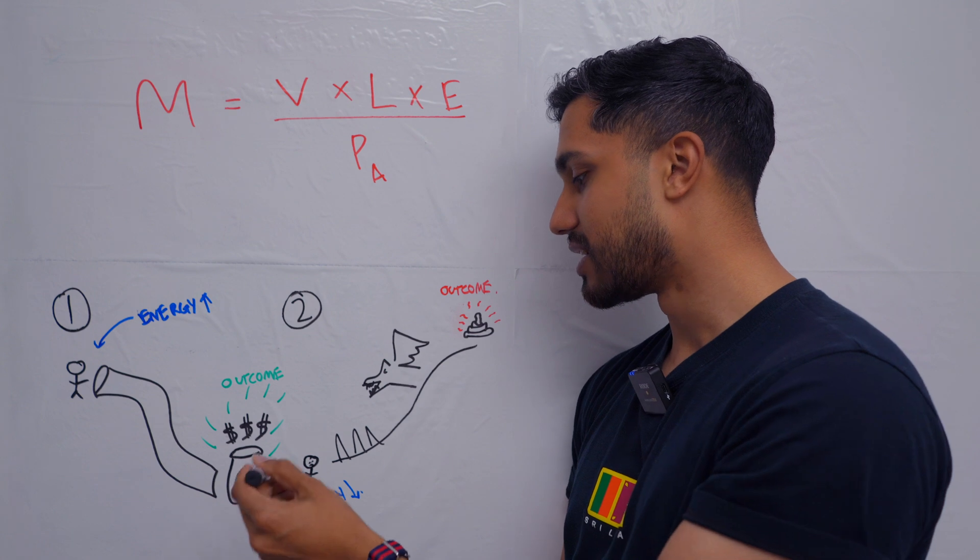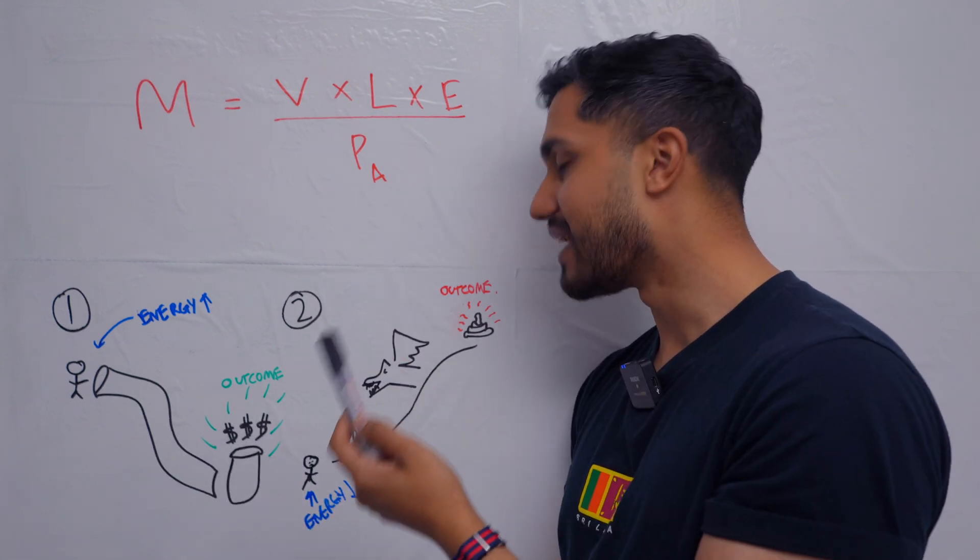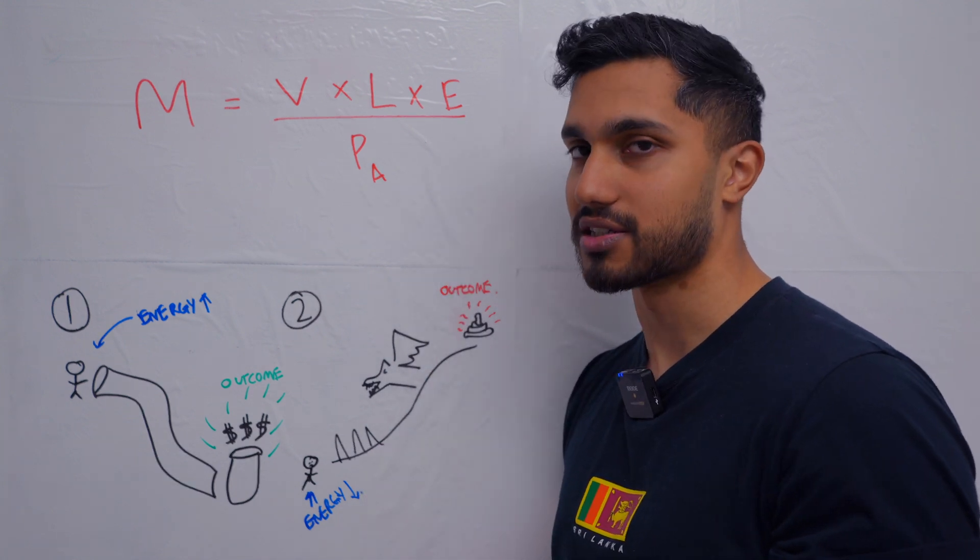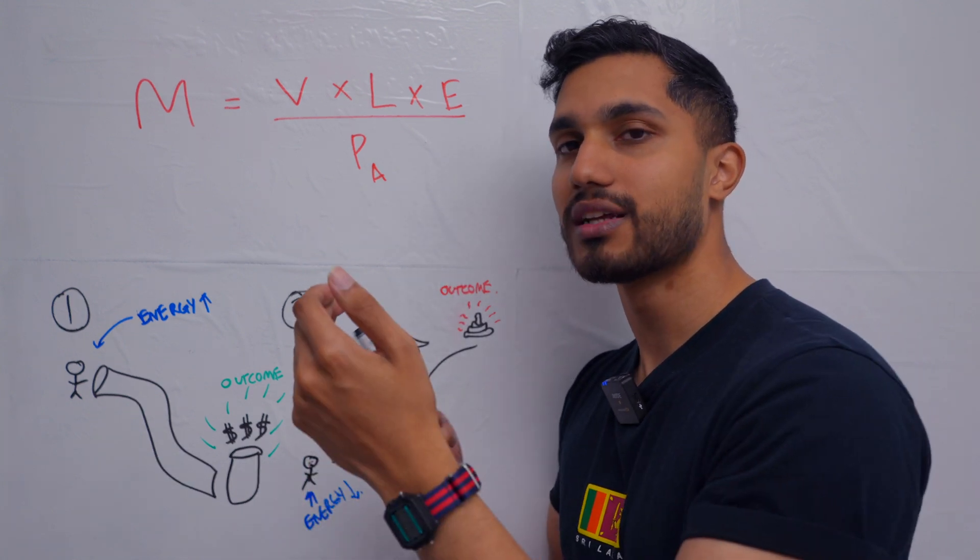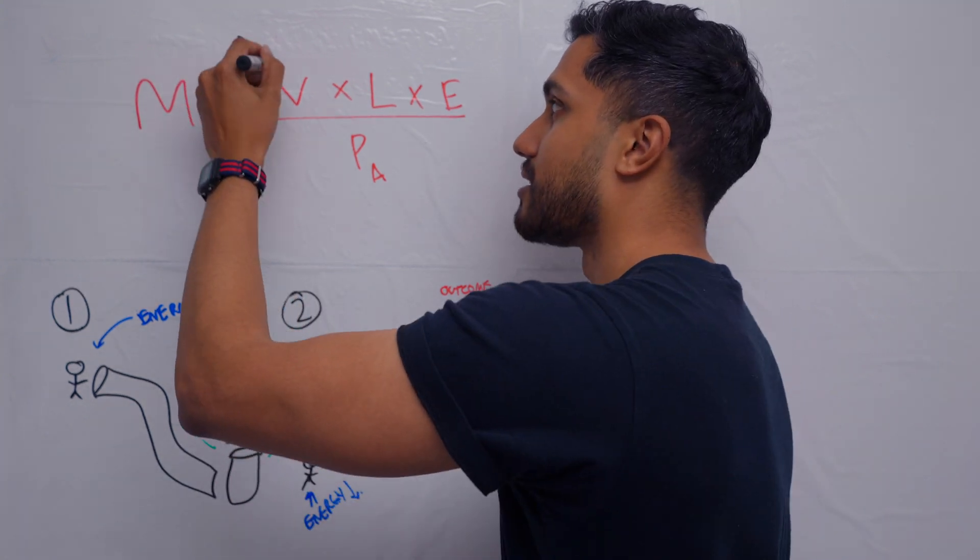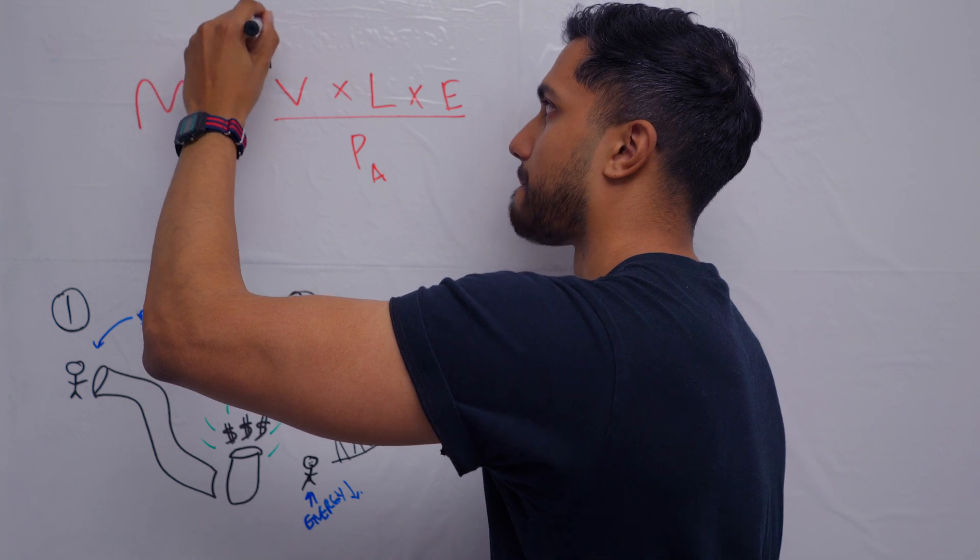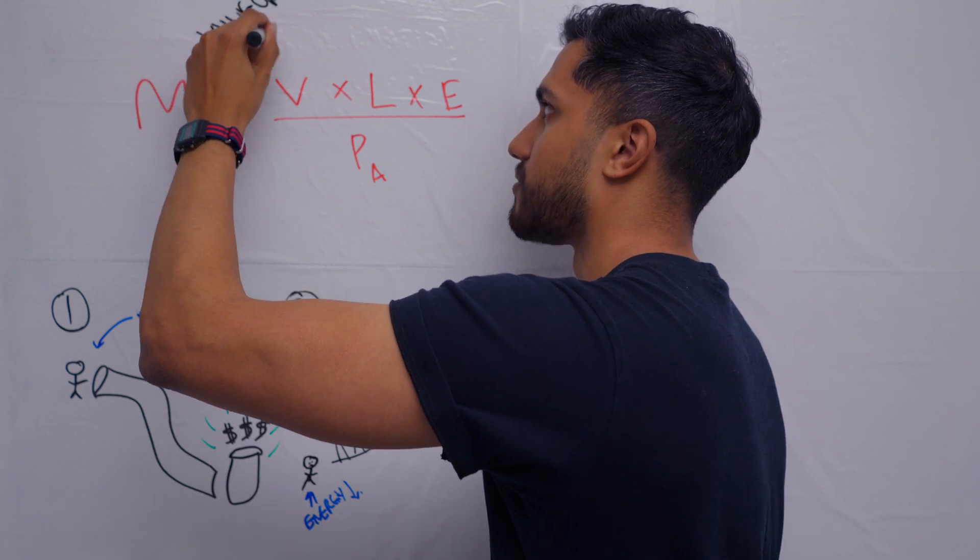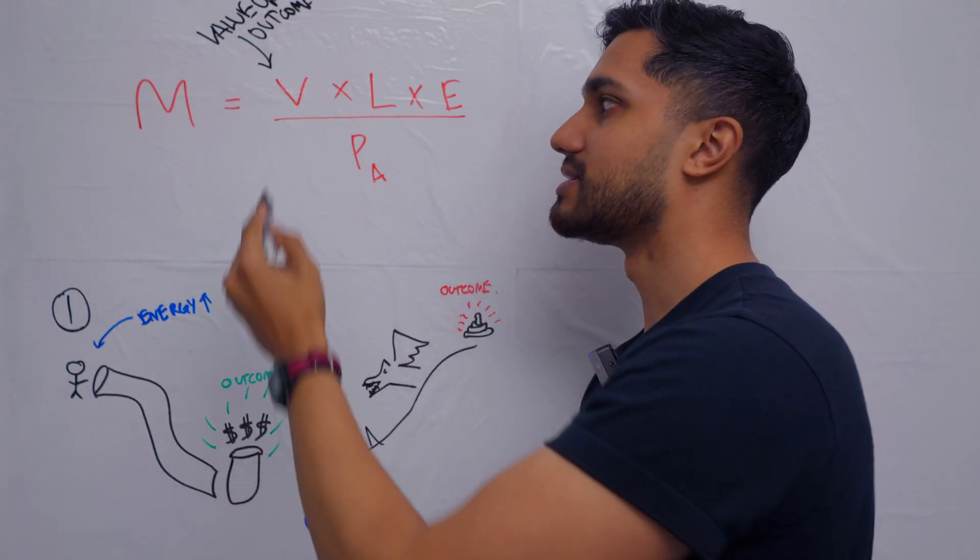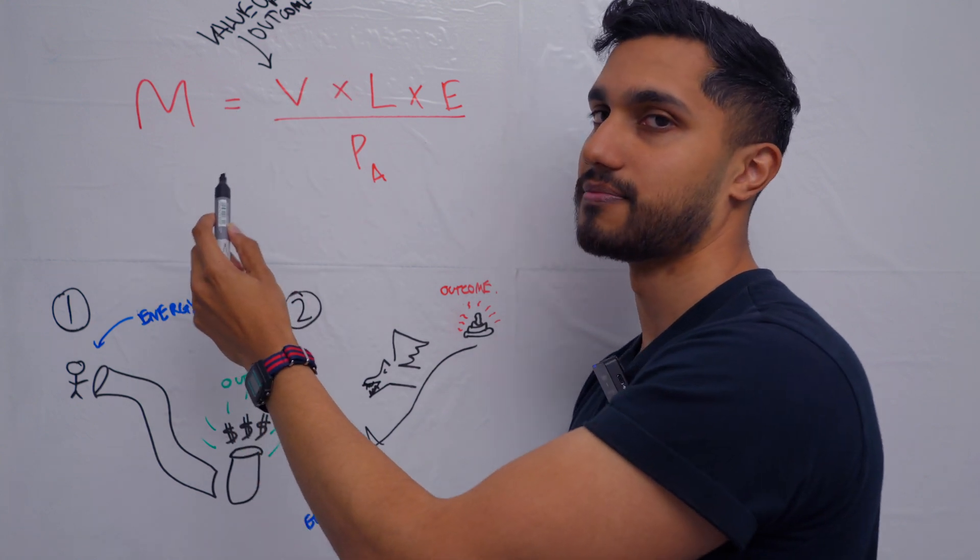In the converse, if you have another actor and the outcome of doing the action is very bad, then it's much harder to motivate themselves to actually do the action. That's why you don't do things that are going to hurt you, because the outcome is bad. So the higher the value of the outcome, the higher the motivation.